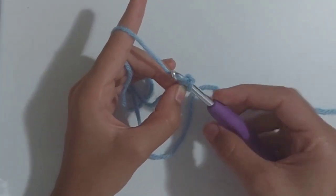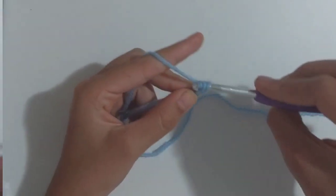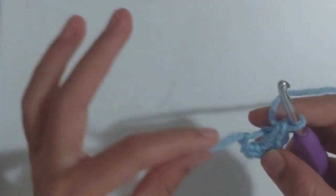And then for this I'll be making six single crochets. And then you're going to pull this tail.